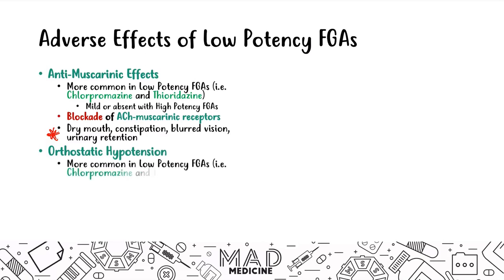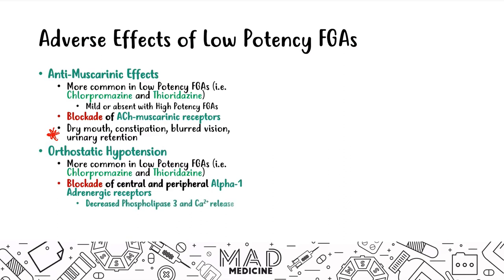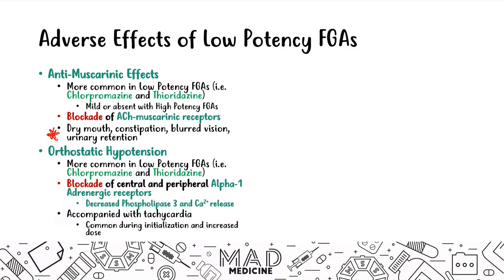Low-potency first-gen drugs can also cause orthostatic hypotension by blocking central and peripheral alpha-1 adrenergic receptors. This leads to decreased phospholipase C activity, decreased calcium release, and when the patient stands, orthostatic hypotension accompanied by tachycardia. This is especially common during drug initiation and dose increases; the tachycardia typically resolves once the patient is stabilized.